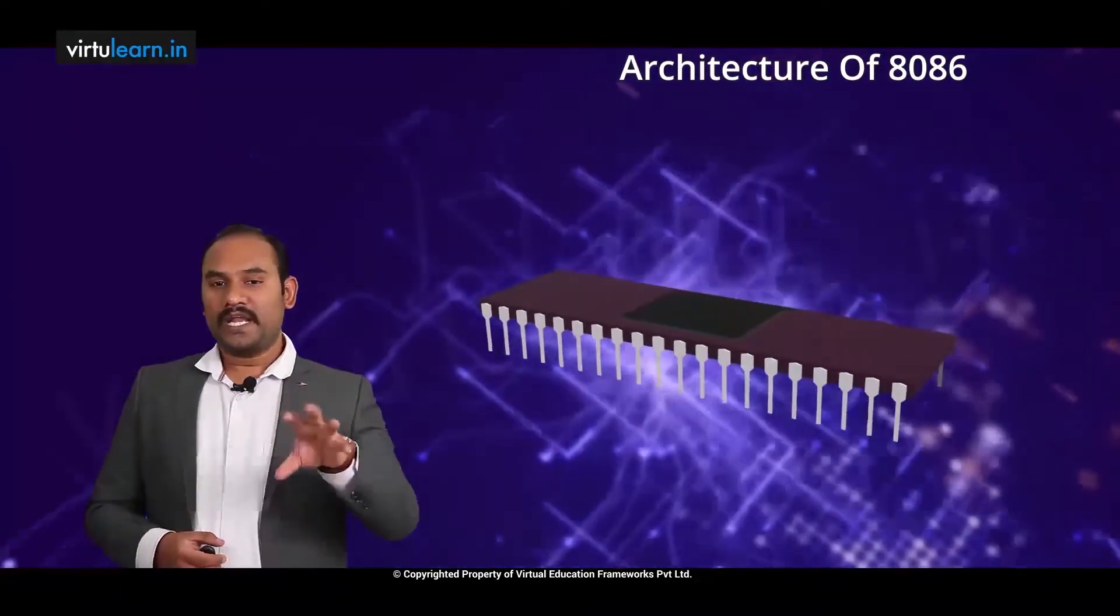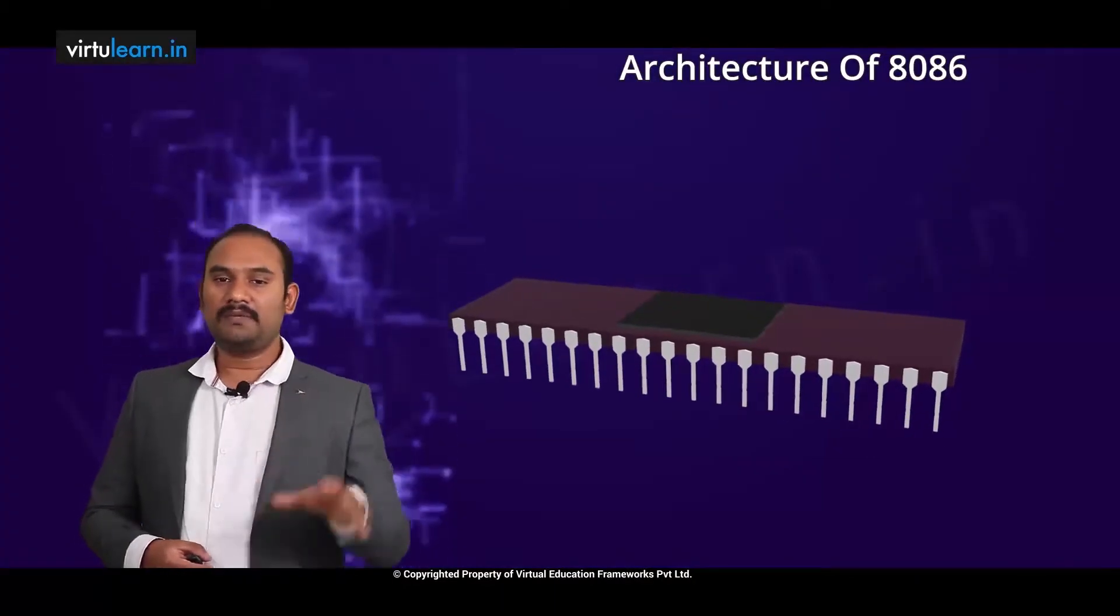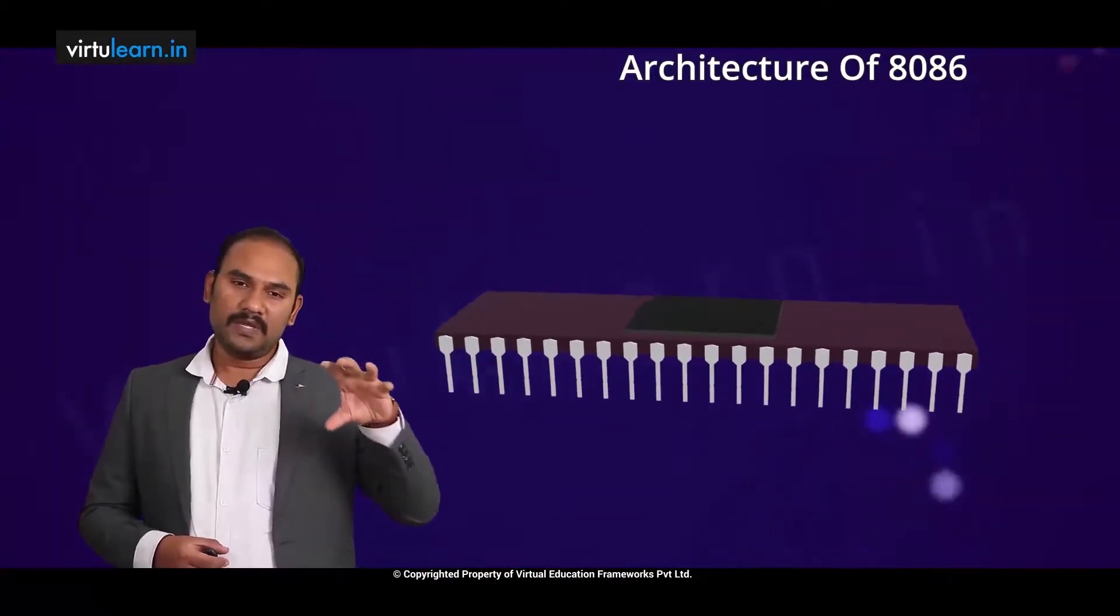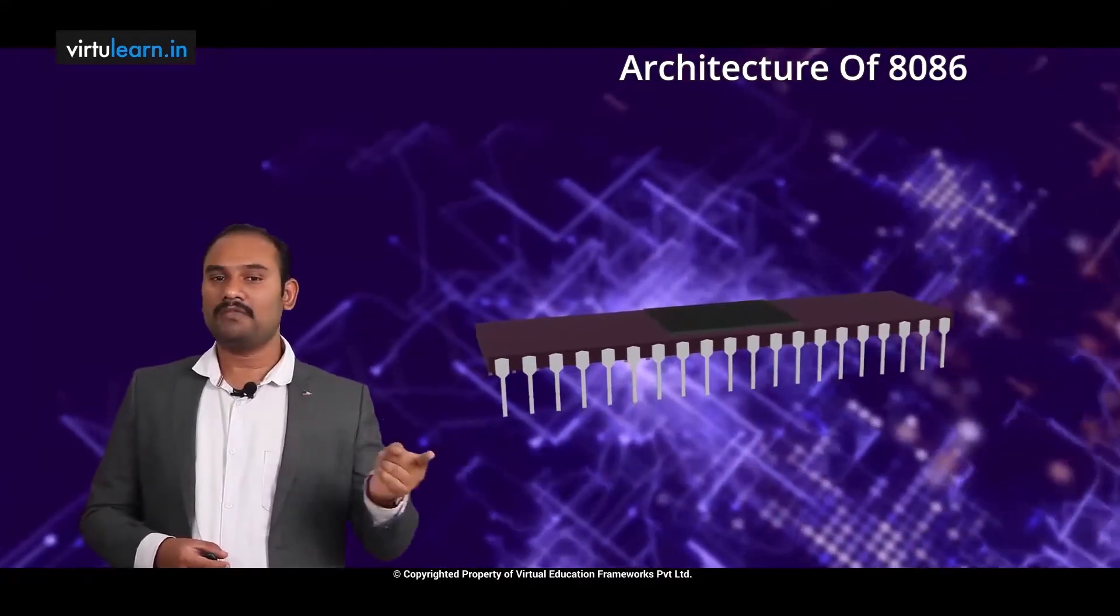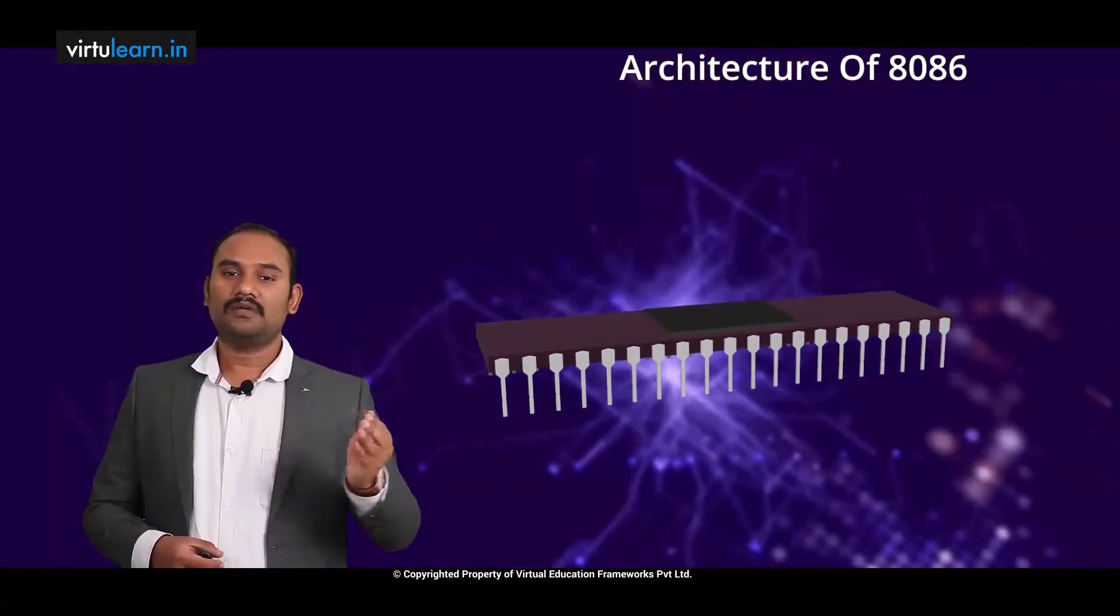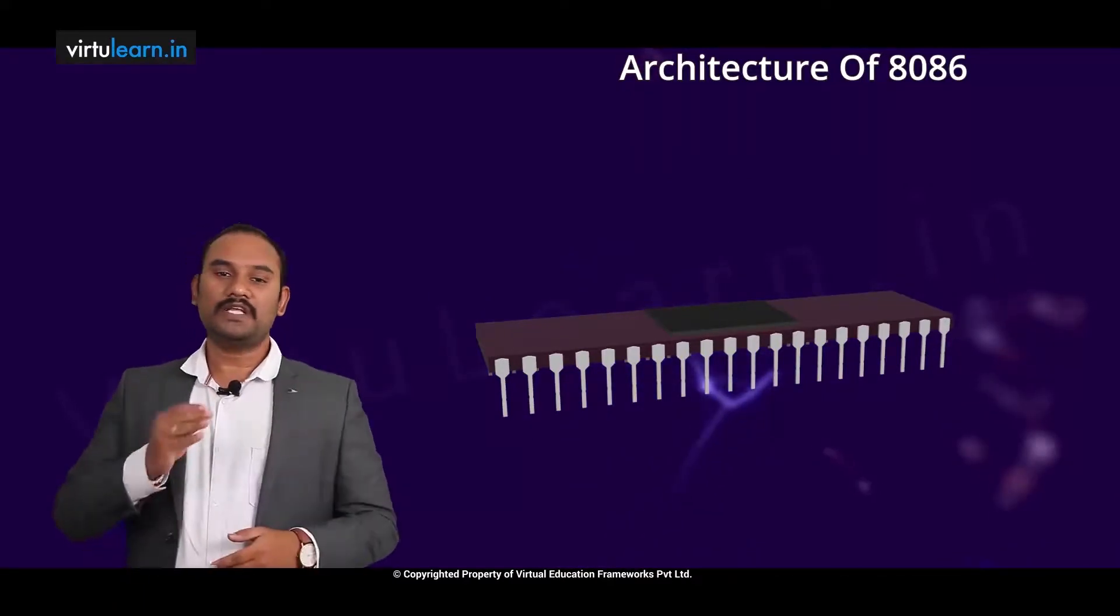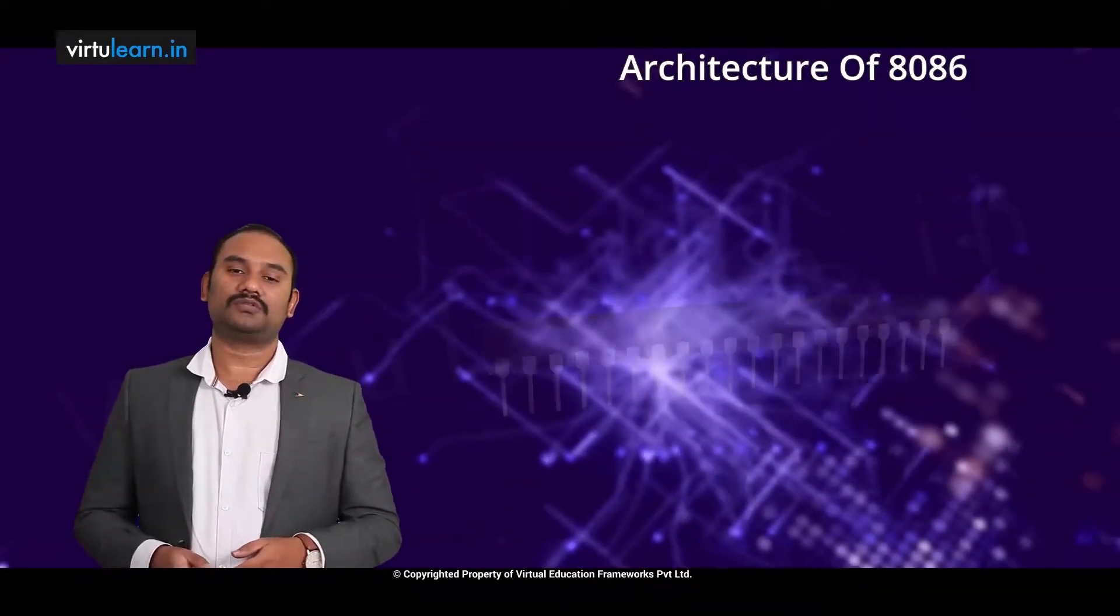So if you take an IC which has 40 pins, there are certain pins out of 40 which have some function when the IC works in minimum mode. The same pins will have some other function when the IC works in maximum mode.